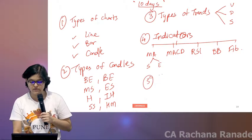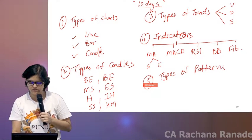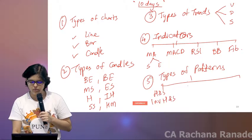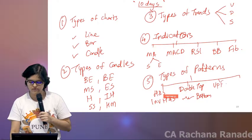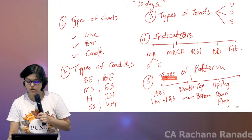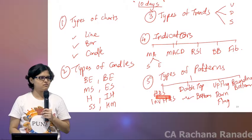And last thing that we did was types of patterns. And in types of patterns we did talk about head and shoulder, inverted head and shoulder, double top, double bottom, up flag, down flag. And last two were a little bit different. One was rounding bottom and the last one was ascending triangle, ascending breakout.